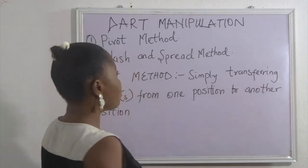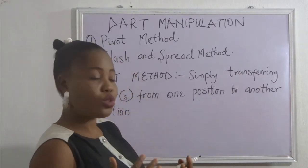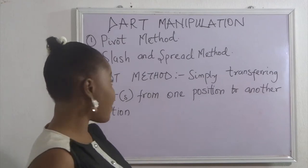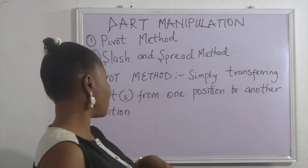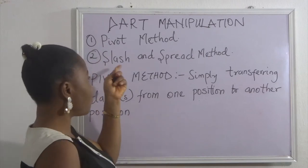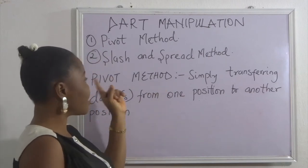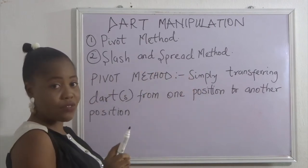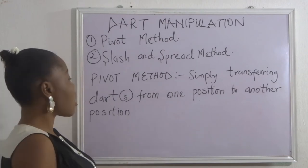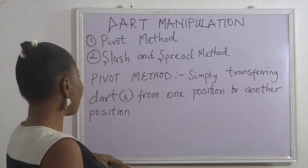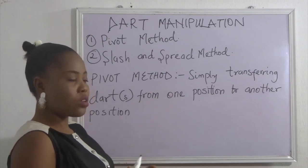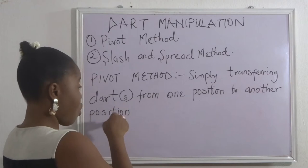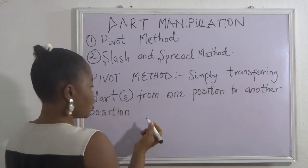Now, you want to manipulate the dart position on your garment through the pattern before you transfer it to fabric. There are basically two methods: one is called the pivot method and the other is called the slash and spread method. Today I will be treating the pivot method. In my next video I'll cover the slash and spread method. The pivot method is simply transferring a dart from one position to another position.